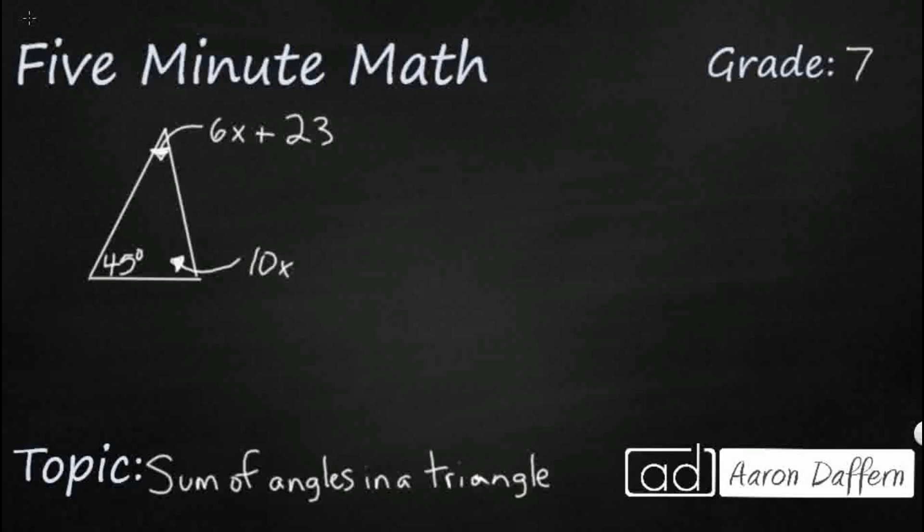So we have a triangle here, looks like it's going to be a scalene triangle, kind of close to an isosceles, but it doesn't look like it exactly has two even sides. And the question is simply, what is x?